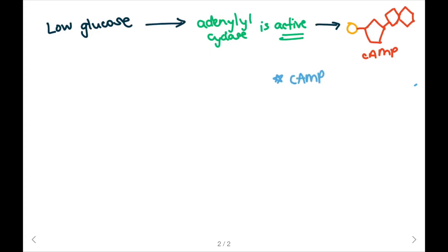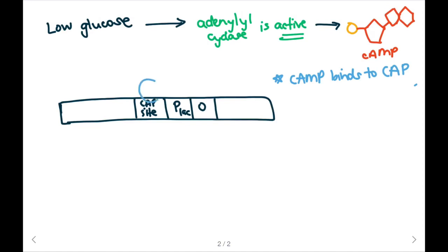Because there's high levels of cAMP, cAMP will bind to CAP and CAP will then bind to the DNA sequence at the CAP site. Here we have our CAP molecule and it's binding to the CAP site. When CAP is bound there will be a higher affinity for RNA polymerase. So RNA polymerase will bind tightly to the promoter and we're going to have high transcription.